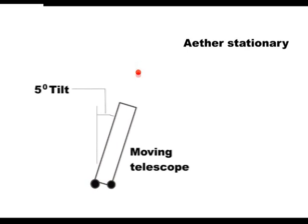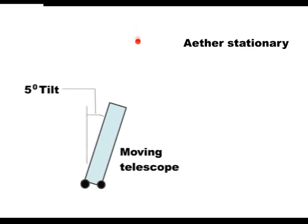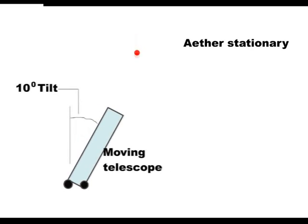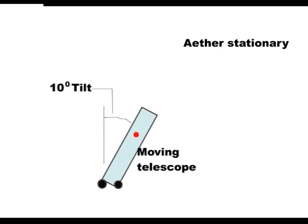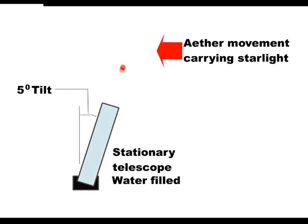To recap, if it is the telescope that is moving, then when it is filled with water, it has to be tipped further to see the star. If the telescope is stationary and the starlight drifting past us, then it does not have to be tipped further.